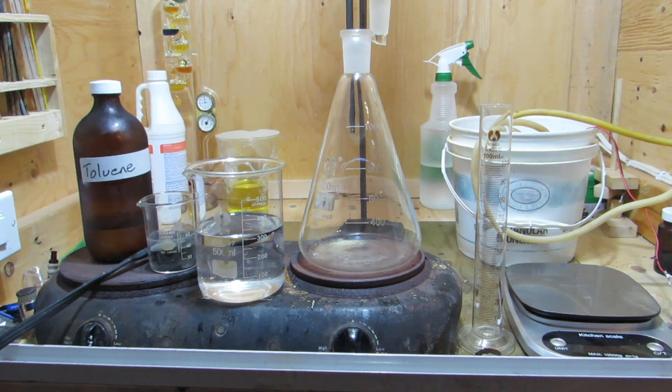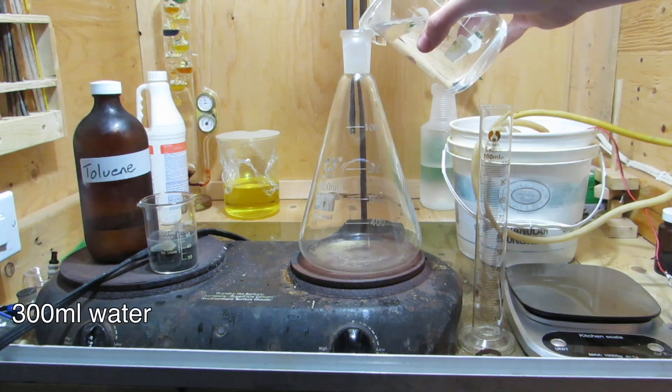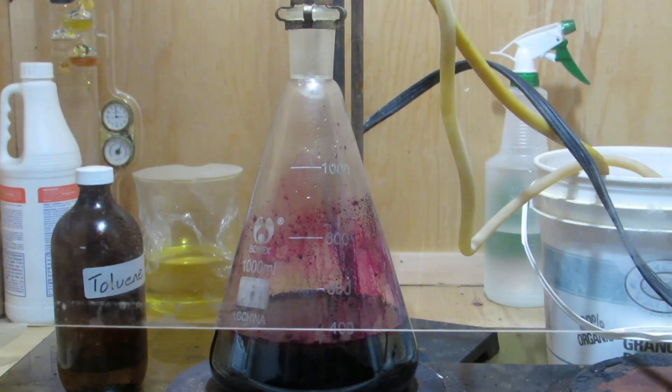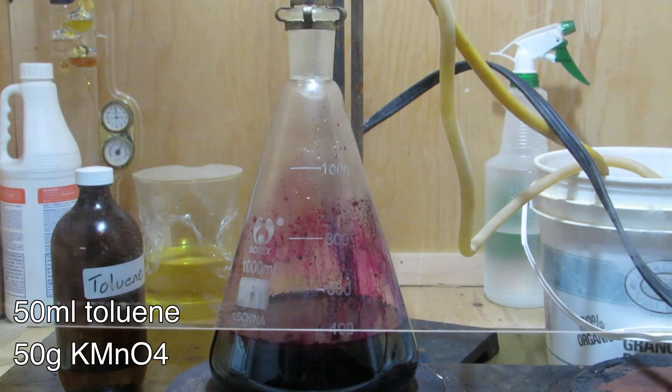Hey guys, welcome back to another video. Today we'll be preparing benzoic acid from potassium permanganate and toluene. To begin, 300 milliliters of water is added to a large Erlenmeyer flask. Next, 50 milliliters of toluene and 50 grams of potassium permanganate were measured out and also added to the flask.